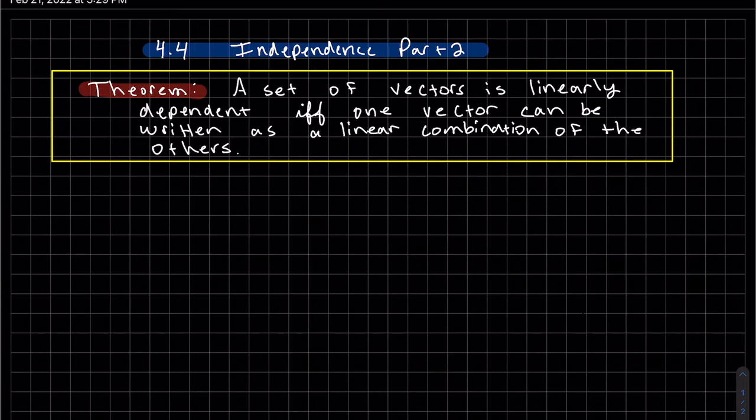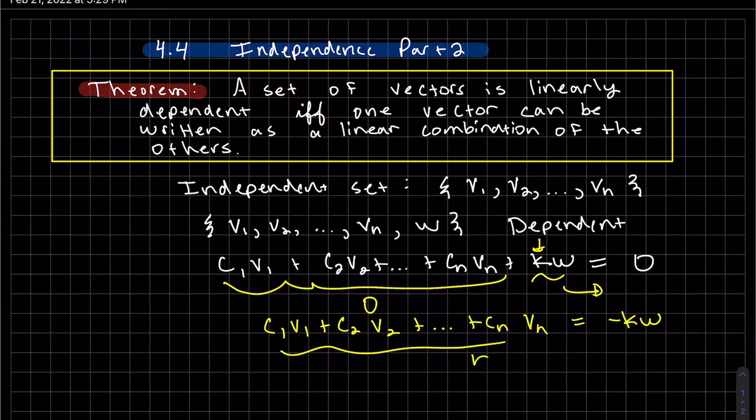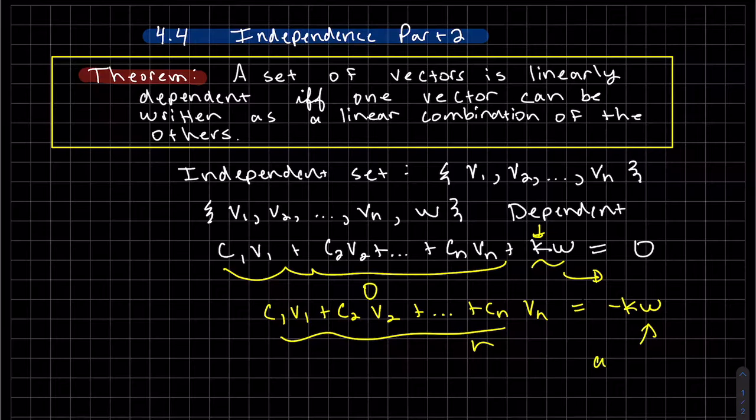So the idea is if we have an independent set and then we add a vector to that set, let's say we add the element w, and our claim is that it's dependent. If we write it out as a linear combination, the original set, which is independent, is equal to zero because that's the definition of independence. And then we add kW. Well, we can move kW to the other side. And since this is zero, this is basically a non-zero solution. Hence, it's dependent.